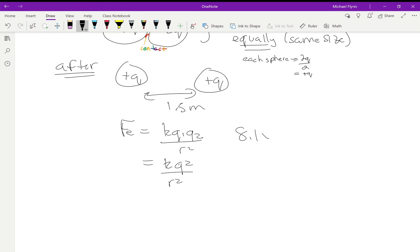So that's 8.1 times 10 to the negative 2 equals 9 times 10 to the 9 times q squared divided by 1.5 squared.